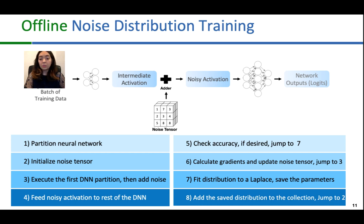We add these saved distribution tuples to a collection of distributions and then start training a new noise tensor. Once we have enough distributions, we stop the training. However, if we did not reach the desired accuracy, we calculate the loss using our loss function and then do backpropagation and update the noise tensor, then jump back to start another forward pass.